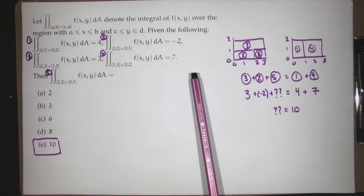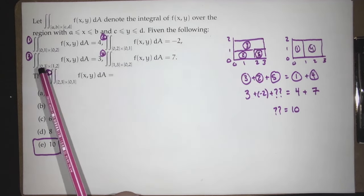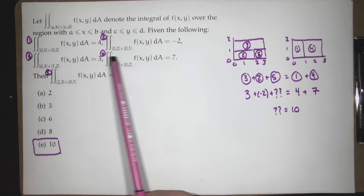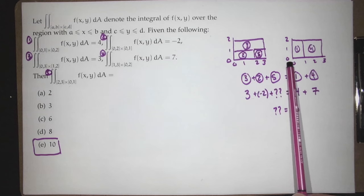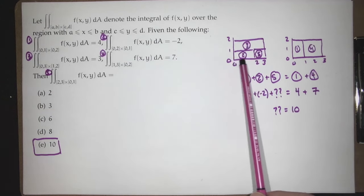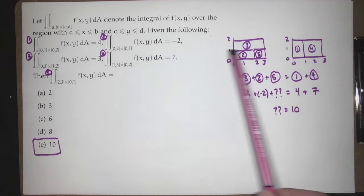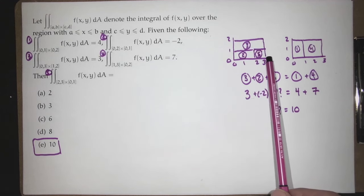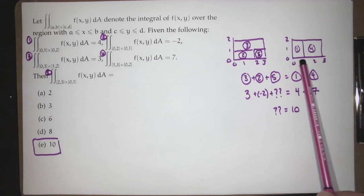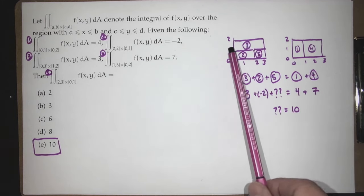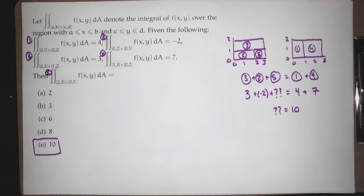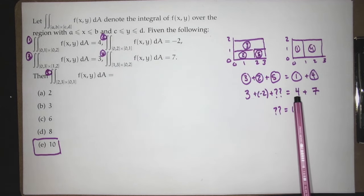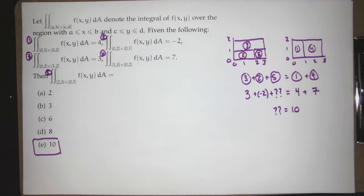If you sketch the regions we're integrating over, integrals 1 through 4 can be grouped. These three combined form a rectangle: x goes 0 to 3, y goes 0 to 2. These two combined also form a rectangle: x goes 0 to 3, y goes 0 to 2. So these three combined must match those two combined. The pieces over those rectangles are 3, minus 2, and the unknown; while the other side gives 4 and 7. That leaves us needing 10 to work out — we have our pieces and we put them together in different ways.